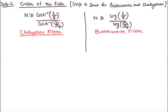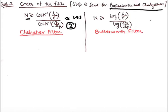When solving such questions, the first step is to determine the order of the filter. We have two filters to discuss: Butterworth and Chebyshev. The first step for designing either filter is the same — we use a formula to calculate n, which must be greater than or equal to the computed value. If we calculate n and find it to be 1.83, we round up to the next integer, so the order becomes 2. If we get 3.4, the order becomes 4.